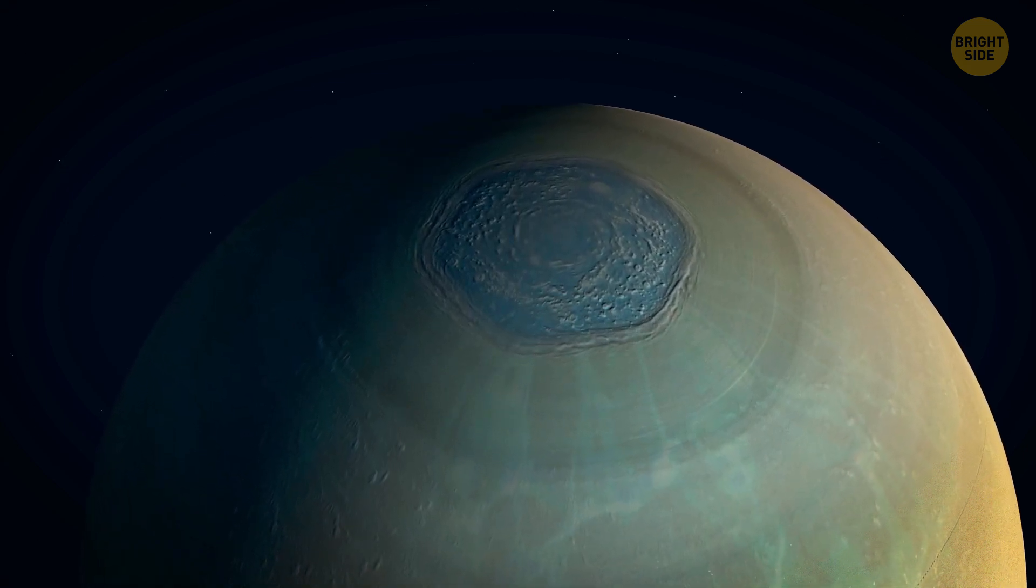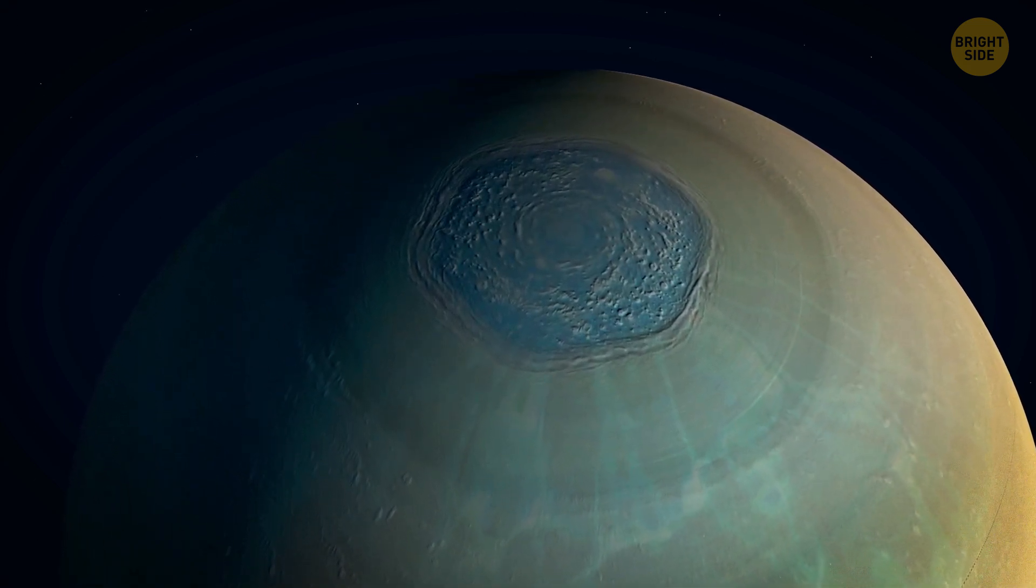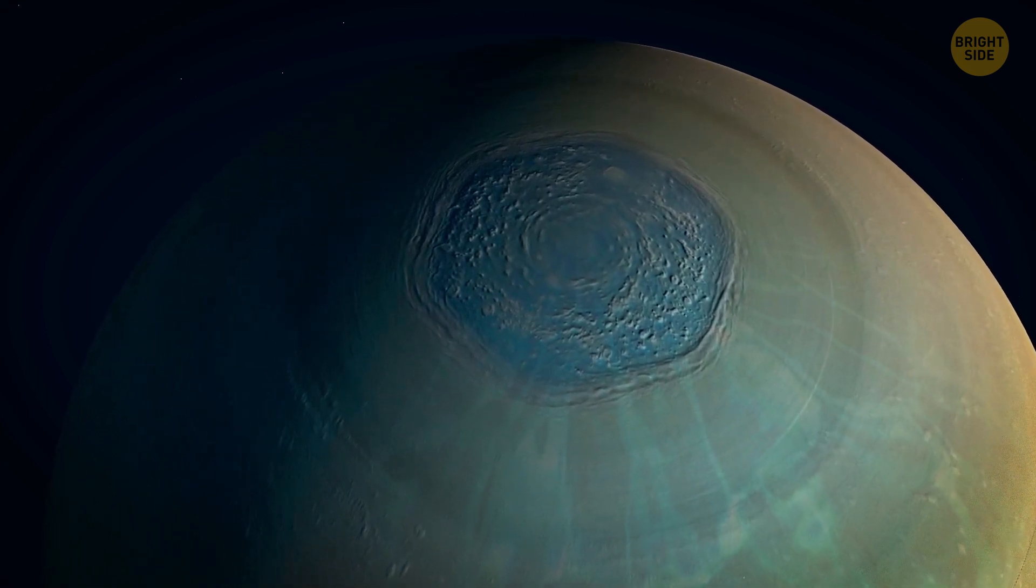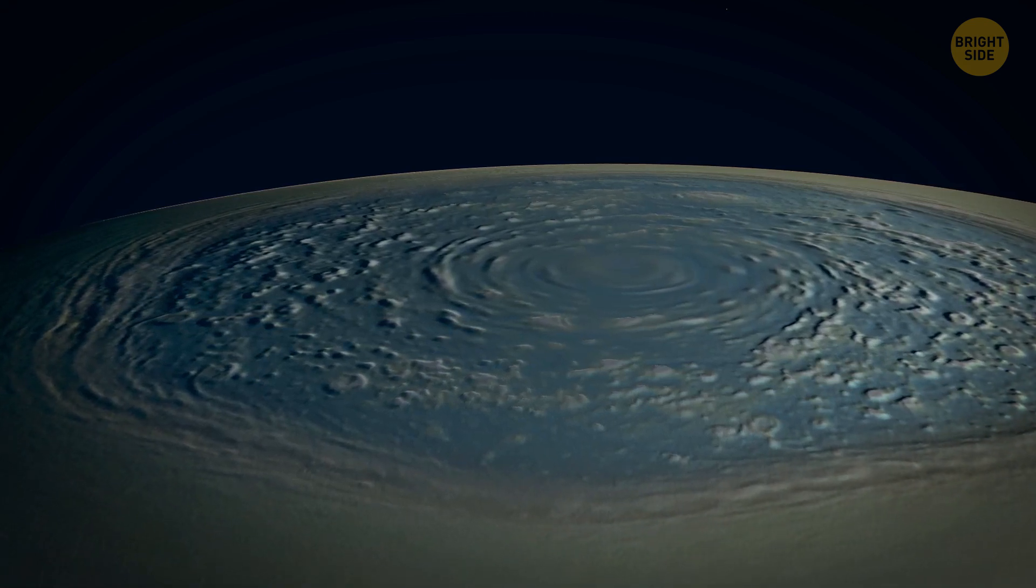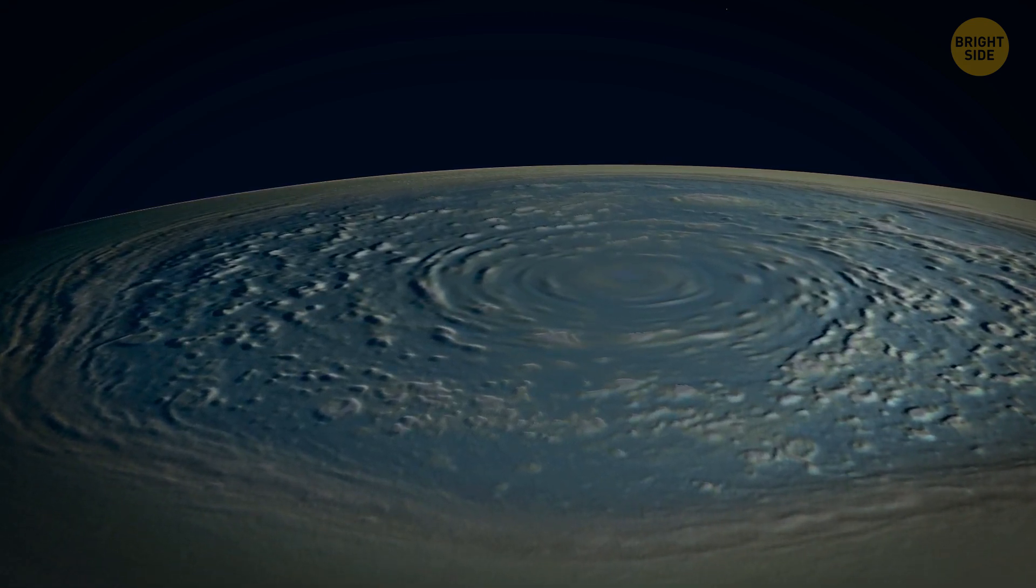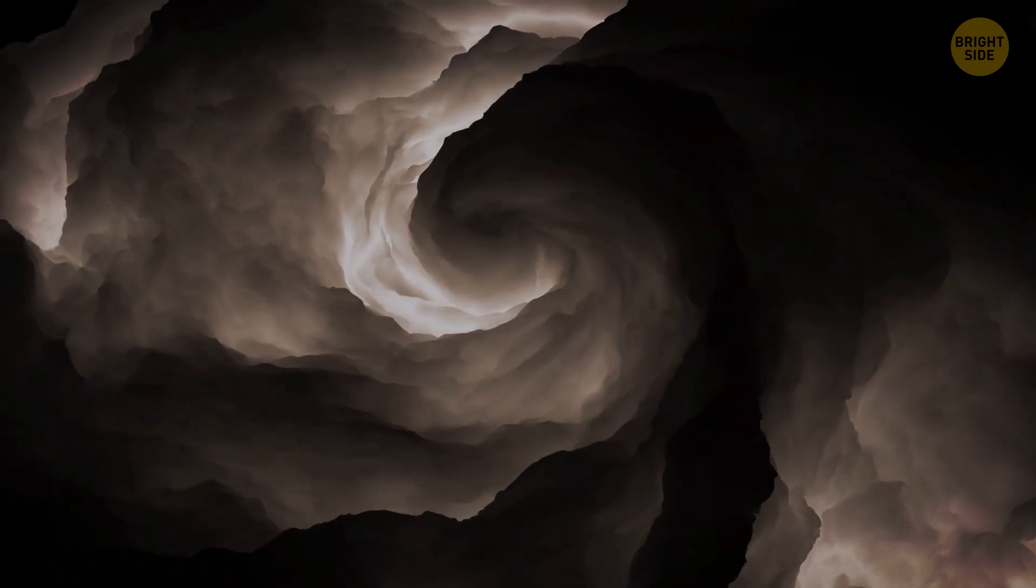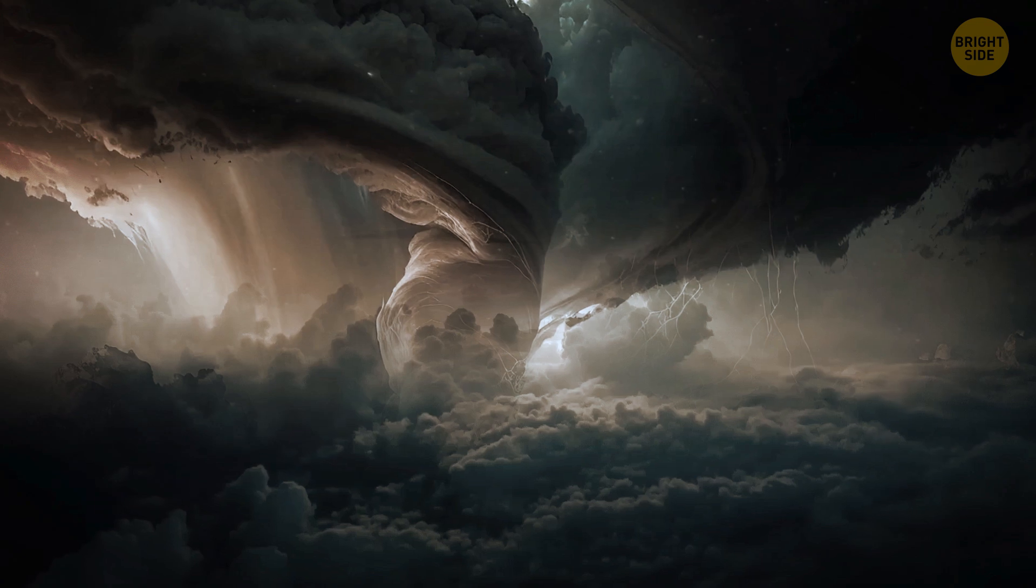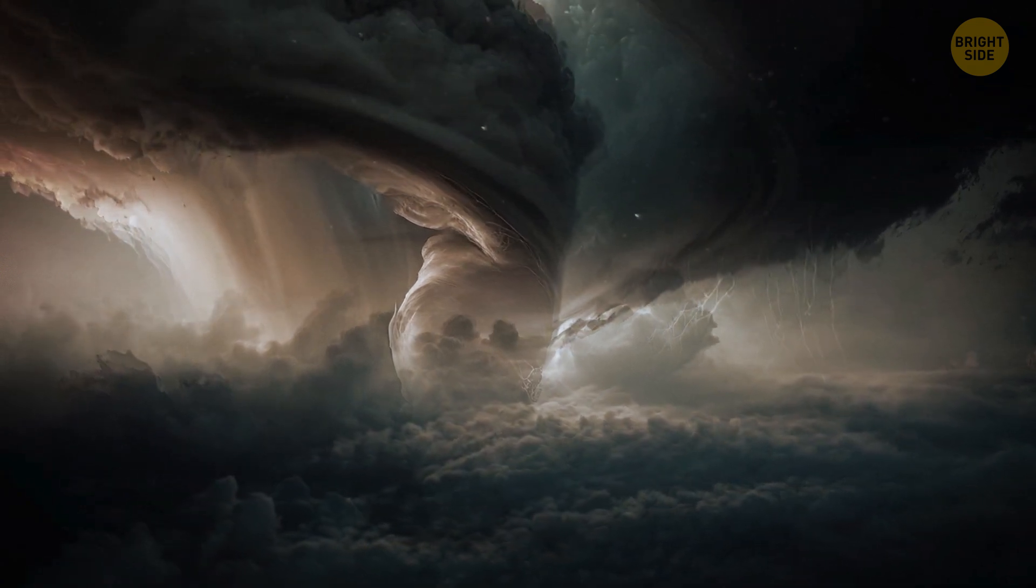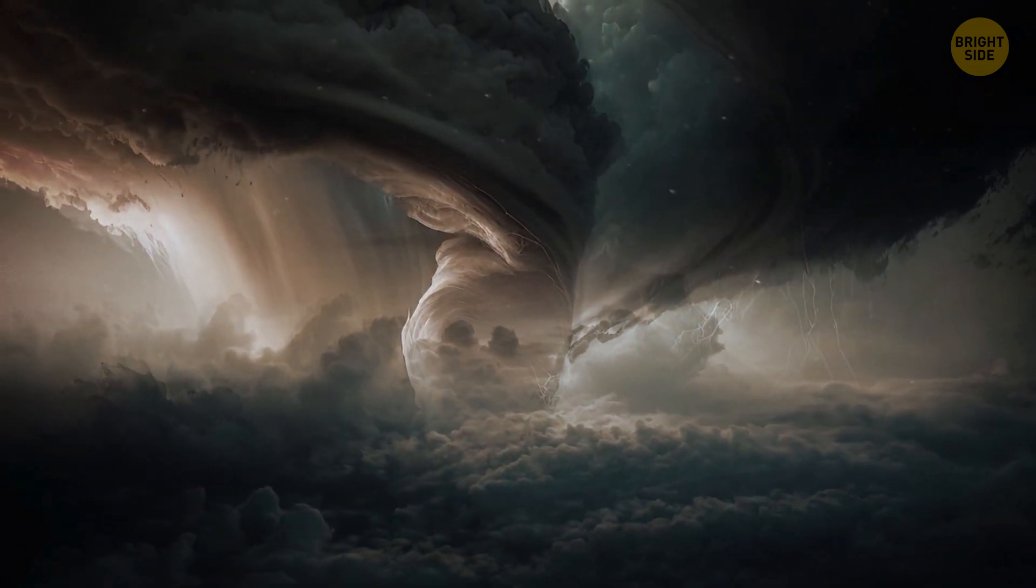As for the hexagon itself, it's a jet stream made up of atmospheric gases. Experts refer to it as just a current of air and weather features. But there is one intriguing detail — a vortex sitting at a higher altitude than Saturn's clouds. It looks like a large towering structure.